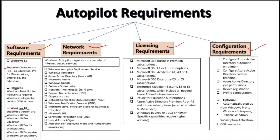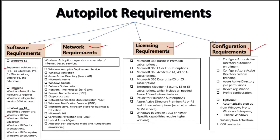With respect to network requirements, Windows Autopilot depends on a variety of internet-based services and access to these services must be provided for Autopilot to function properly. Ensure DNS name resolution for internet DNS is working, allow access to all hosts via port 80, 443, and 123. Additionally, we may require granting access to required services in environments that have more restrictive internet access and require authentication before internet access can be obtained.